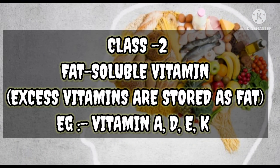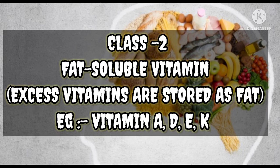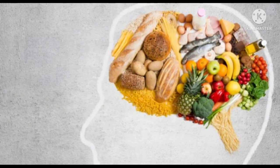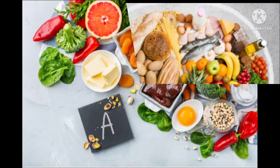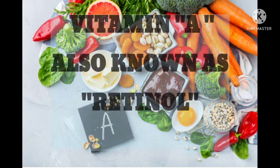The second class is fat-soluble vitamins — excess vitamins are stored as fat. Examples include vitamins A, D, E, and K, which are soluble in fat.